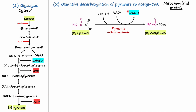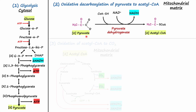Oxidative decarboxylation of pyruvate converts pyruvate into acetyl coenzyme A, and this reaction takes place in the mitochondrial matrix. During the reaction, it also generates two NADH, because the initial reaction involves two molecules of pyruvate.